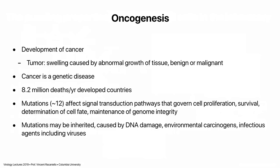What causes cancer? It's a genetic mutation — about a dozen mutations that affect proteins in signal transduction pathways governing cell proliferation, survival, cell fate, and the maintenance of genome integrity. We need mutations in multiple genes encoding multiple proteins involved in these processes. We know this because we are now sequencing the genome of people's tumors. These mutations can be inherited from your parents, come from DNA damage like excess UV exposure causing skin cancer, environmental carcinogens, or infectious agents including viruses.